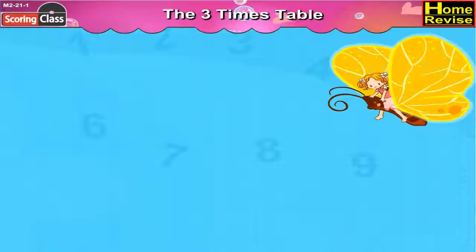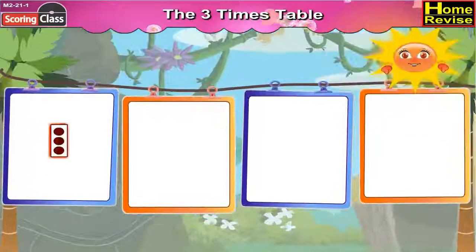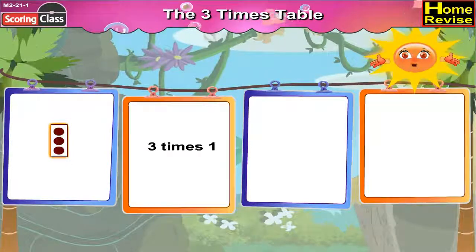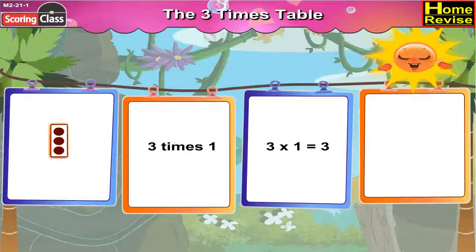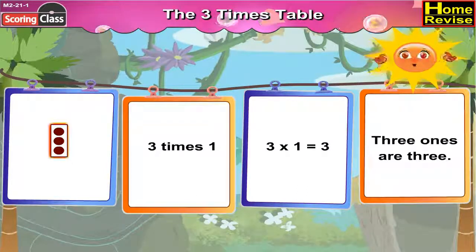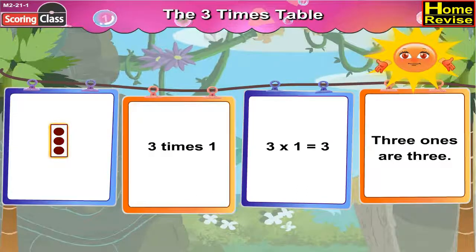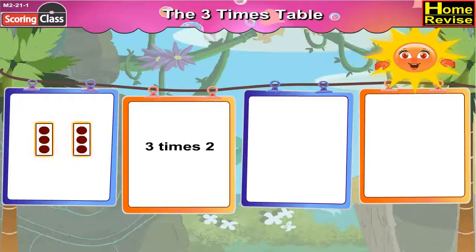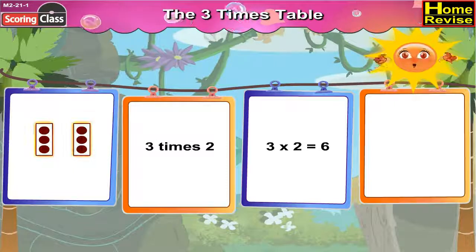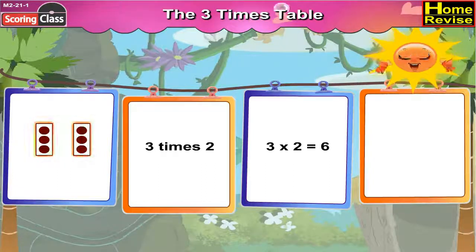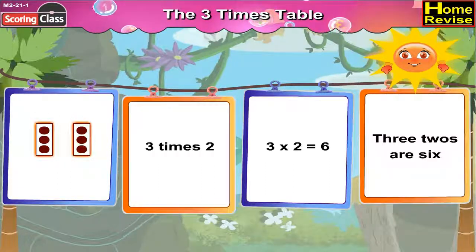The three times table. Here comes the table of three. Three times one, that is three multiplied by one, is equal to three. We say it as three ones are three. Three times two, that is three multiplied by two, is equal to six. We say it as three twos are six.